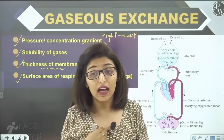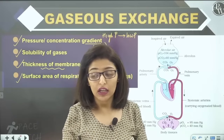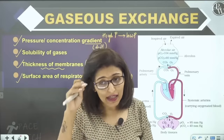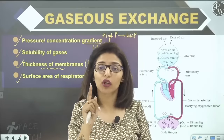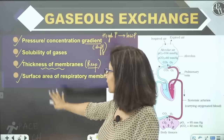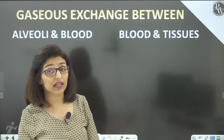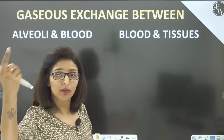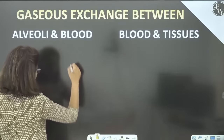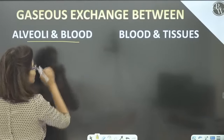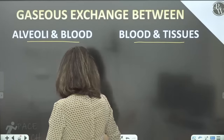Diseases, smoking, and pollution can all damage alveoli and impair gaseous exchange. These four factors regulate gaseous exchange. Gaseous exchange from the atmosphere into the lungs is already done. Now, two more exchange sites: one between alveoli and blood, and one between blood and tissues. The blood capillaries surround the alveoli, and de-oxygenated blood arrives there while oxygenated blood leaves.